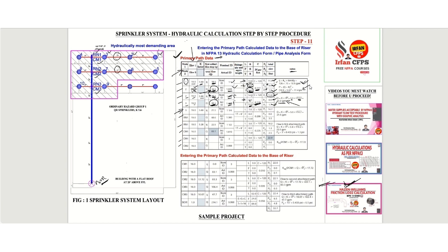For Node 3 to RN1, we entered the data and calculated the small q and capital Q. The nominal ID is mentioned, and there is one tee fitting with an equivalent length of 6 feet, making the total pipe length 13 feet. Using the friction loss formula, we get a friction loss of 0.266, and the flow calculated is 21.5 GPM.